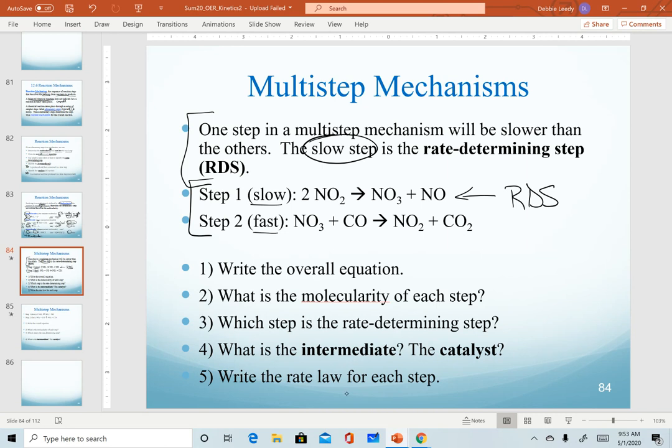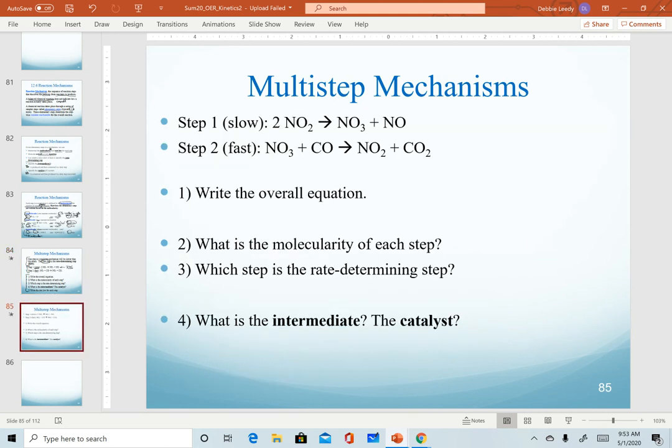As we go through examples, we'll see there are two variations of how we can determine rate determining step. In this one, super straightforward, we're actually told which one is slow. So for this two-step mechanism, we are going to identify the information that's listed down here, numbers one through five. I've spread this out on the next slide so that we have room to work.